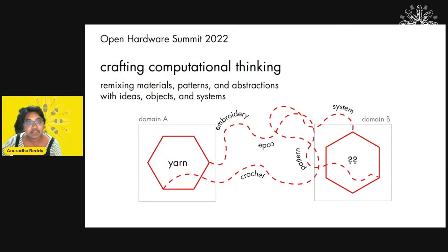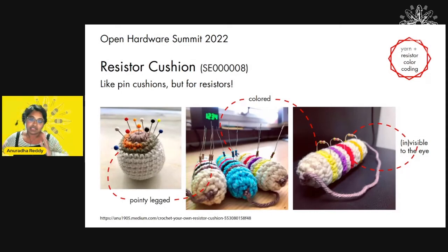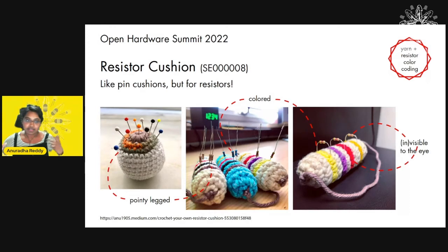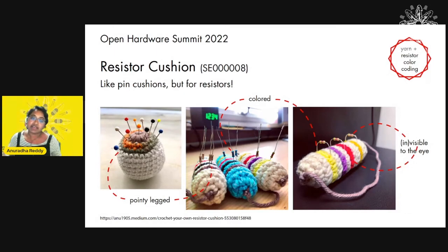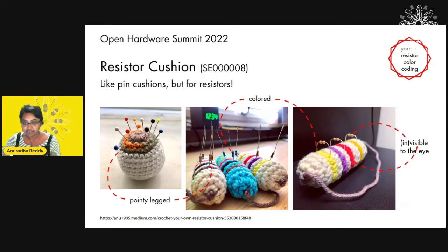The first is the resistor cushion. It combines two worlds: yarn and electronic components, particularly resistors. In the yarn world we have needles — pointy and sharp — and we have a solution: pin cushions. In the electronics world we also have things that are pointy and sharp, but we have no place to put them unless we put them back in a little box. So I created resistor cushions. Both yarn and resistors have color coding, which is interesting. Also, resistors can be really hard to see, especially if you're slightly visually impaired — so with a cushion you can also see them in a bigger size. This becomes a practical product that anybody can make and use.